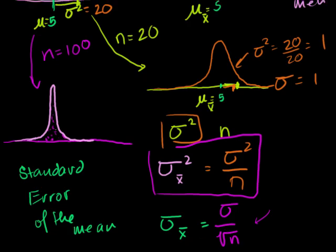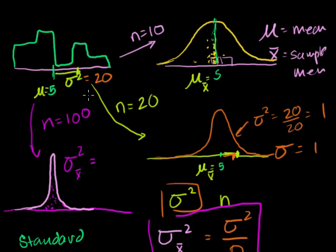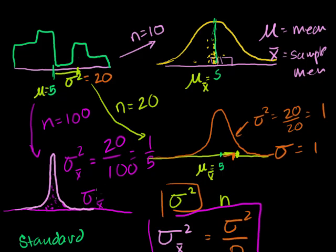So here, when n is 20, the standard deviation of the sampling distribution is 1. When n is equal to 100, our variance of the sampling mean is equal to 20 divided by 100, which equals one fifth. So the standard error of the mean is going to be 1 over the square root of 5. That's a little bit under 1 and a half, while the n=20 case had a standard deviation of 1. So you can see it's definitely thinner.